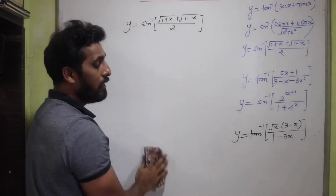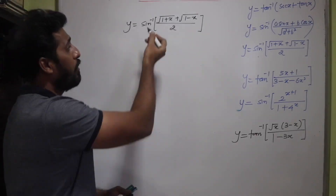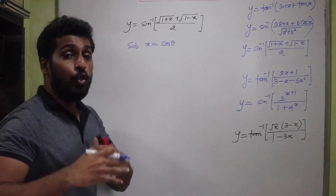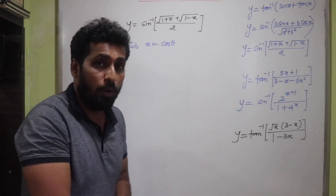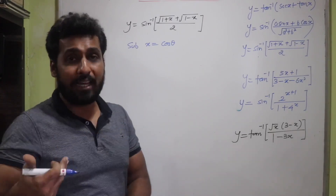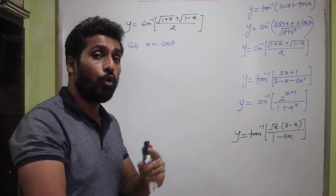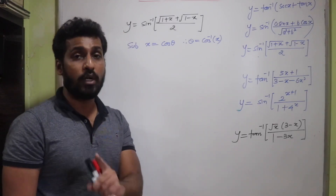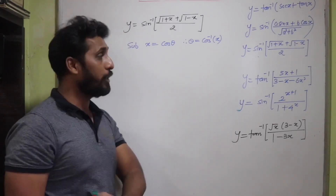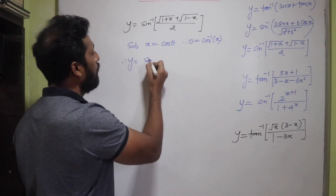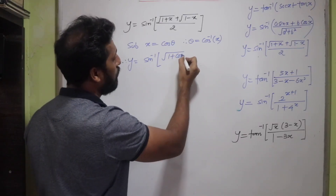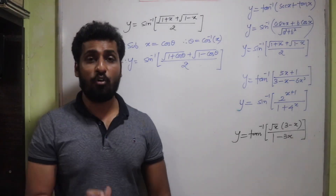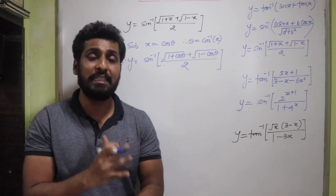Substituting x = cos θ: y = sin⁻¹((√(1+cos θ) + √(1−cos θ)) / 2). Using half-angle formulas: 1 + cos θ = 2cos²(θ/2) and 1 − cos θ = 2sin²(θ/2). So √(1+cos θ) = √2·cos(θ/2) and √(1−cos θ) = √2·sin(θ/2).